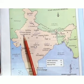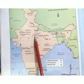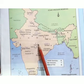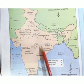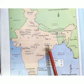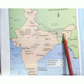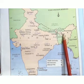Number four is Shivpuri in Madhya Pradesh, number five is Kanha National Park also in Madhya Pradesh. Simplipal National Park is in Odisha, and Manas National Park is in Assam.